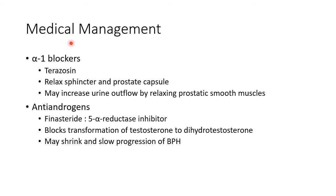Now let us see about the medical management of BPH. We can use alpha blockers like terazosin — it relaxes the sphincter and the prostate capsule, and may increase urine outflow by relaxing prostatic smooth muscles. Antiandrogens like finasteride can also be used. It is a 5-alpha reductase inhibitor that blocks the transformation of testosterone to dihydrotestosterone, and it may shrink and slow the progression of BPH.